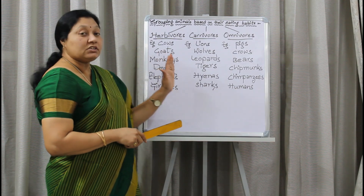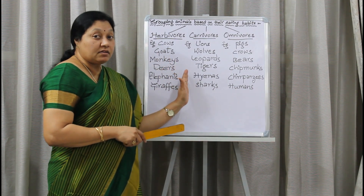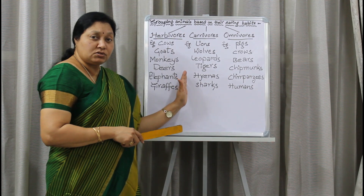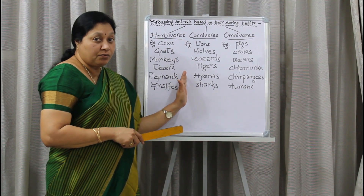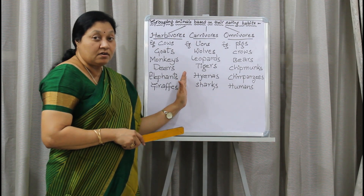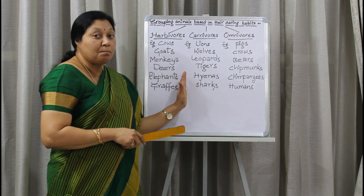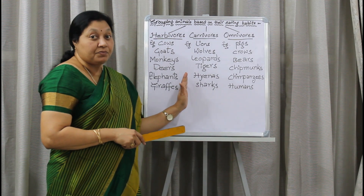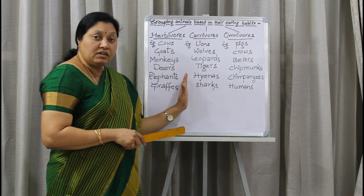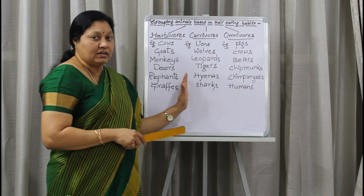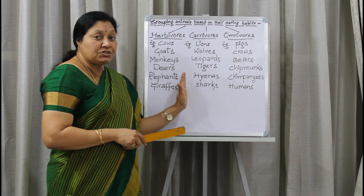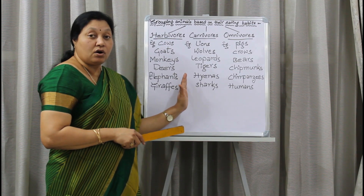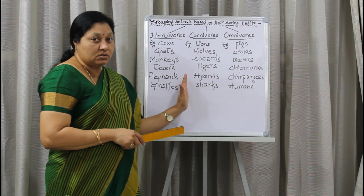Coming to the second group, they are the carnivores. This word is also derived from Latin. 'Carni' means meat or flesh, and 'vorare' means to eat. So all flesh-eating animals are called carnivores.